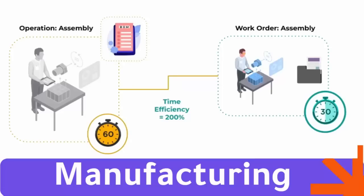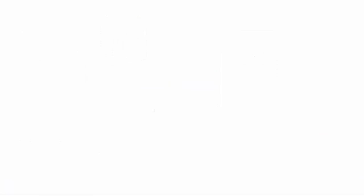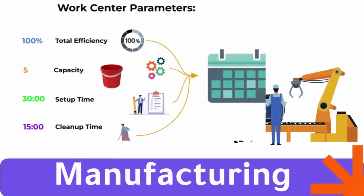The planned production time for a work order is based on the duration that we assigned to that particular operation. However, when we take other factors like efficiency and capacity into account, calculating how long a work center remains in use becomes a tad more complicated. Luckily, Odoo does the math and the planning for us.